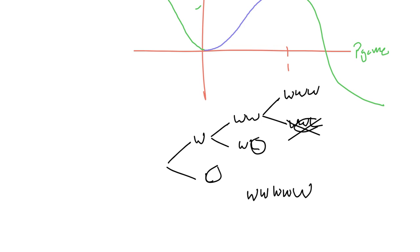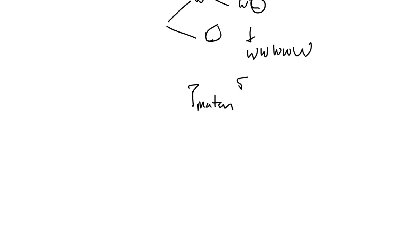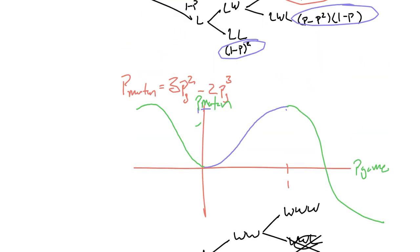Well, it's just the probability of winning times five. It's going to be P_match to the fifth. So what they want, then, is just a graph of P_match to the fifth, or this function, 3P_G squared minus 2P_G cubed to the fifth. Now, this plot is a little wonkier, but same basic idea.